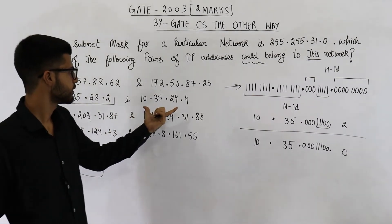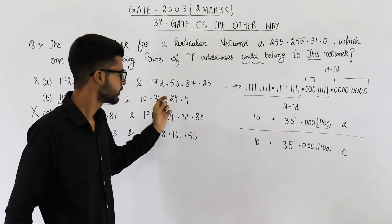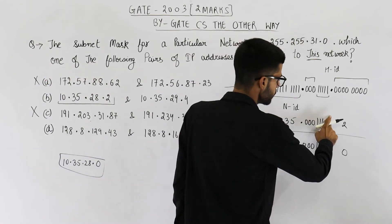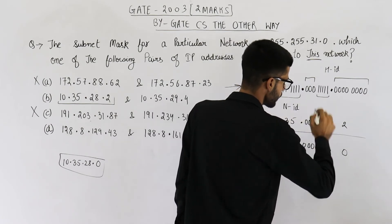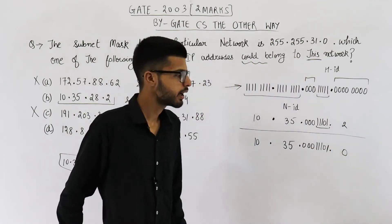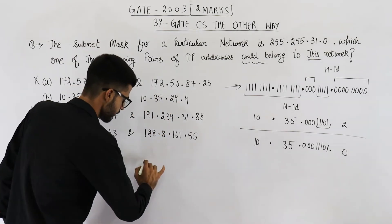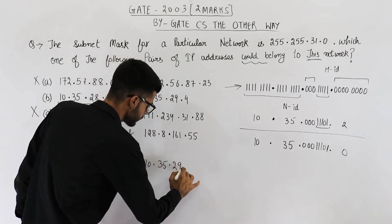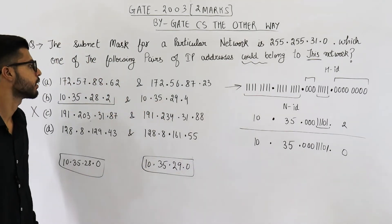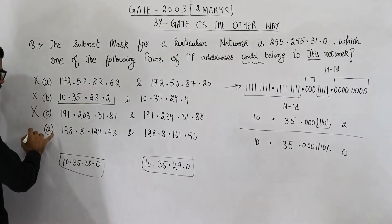Now let us find the network ID for the second IP address in option B. For this one it will be 10.35. Then 29 when converted to binary will give a slightly different result, and when you AND it with the mask, the network ID for this IP address is 10.35.29.0. Because both of them belong to different networks — one is 10.35.28.0 and the other is 10.35.29.0 — option B is also rejected. Only option D is left.